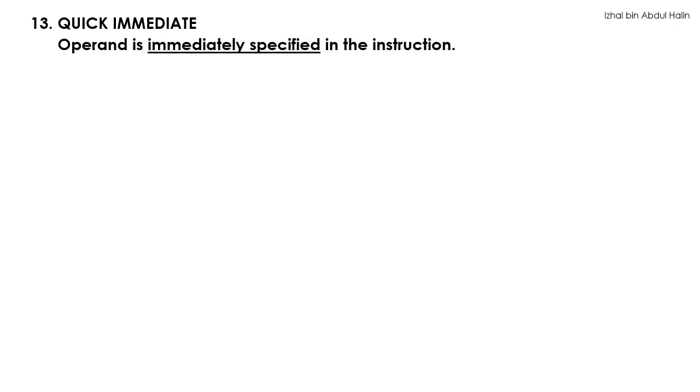We will skip the 12th addressing mode which is the program counter addressing mode — its application is limited. Thus we will jump to number 13 which is the quick immediate addressing mode. This addressing mode is similar to the immediate addressing mode where the operand's value is specified in the instruction. One difference is that you may use this addressing mode only with instructions that have the letter Q at the back, for example the MOVEQ command.